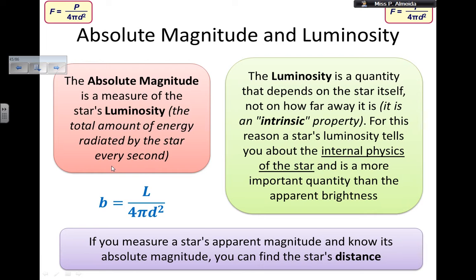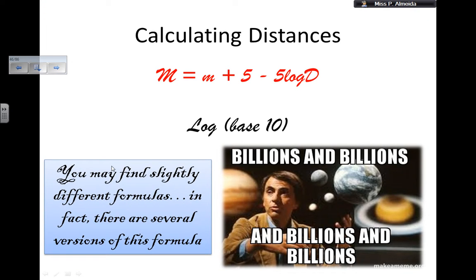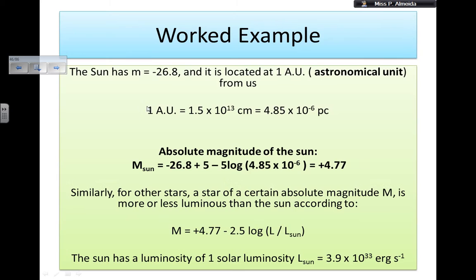I use this formula: big M, the absolute magnitude, equals small m, the apparent magnitude, plus 5 minus 5 times the logarithm of the distance. This logarithm is base 10 — not the natural logarithm ln. So it's log base 10 of d, the distance. You may see this formula written in different shapes but they are all equivalent. The absolute magnitude equals the apparent magnitude, plus 5, minus 5 log of distance. This distance, by the way, is in parsecs — not meters.